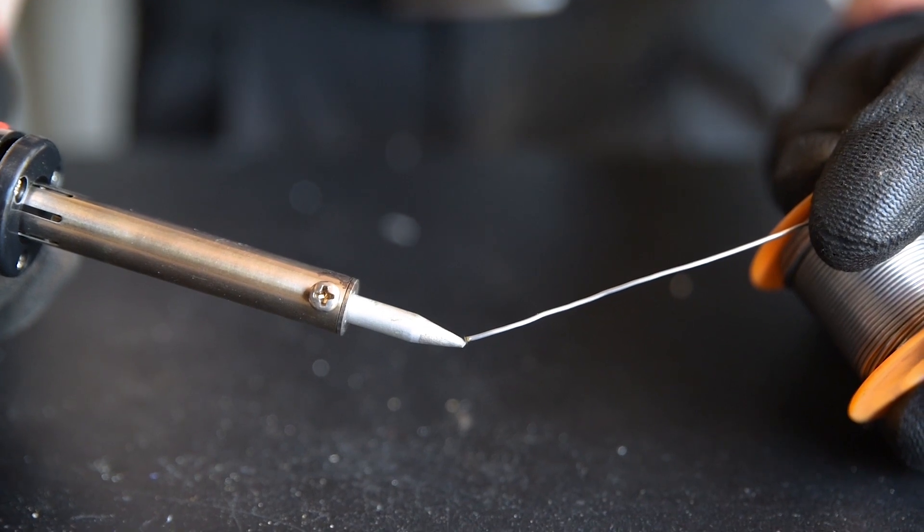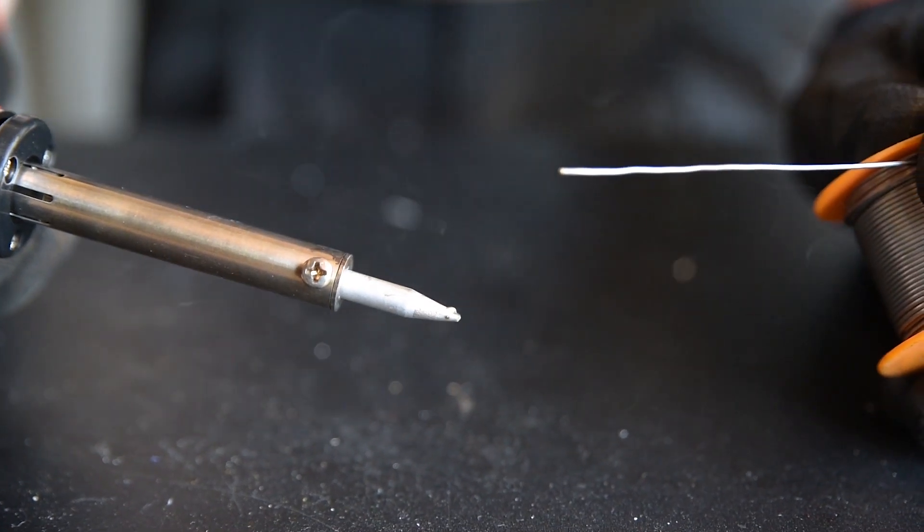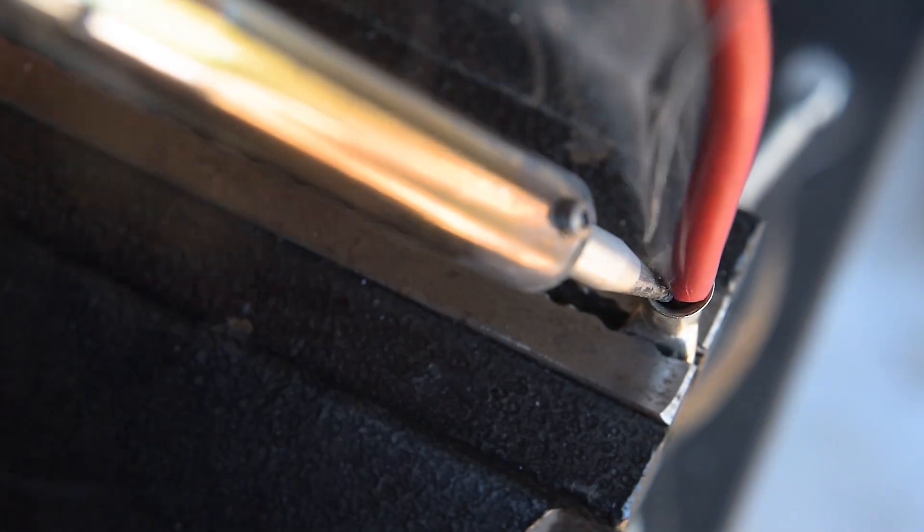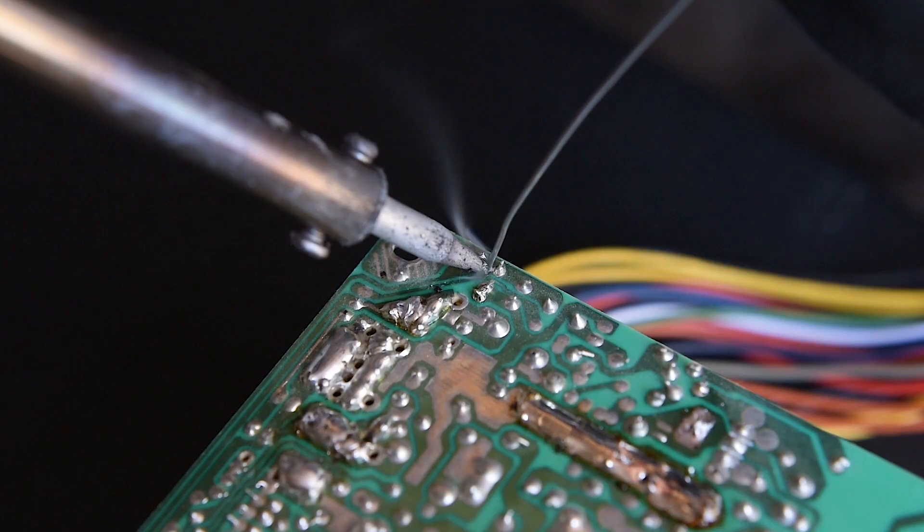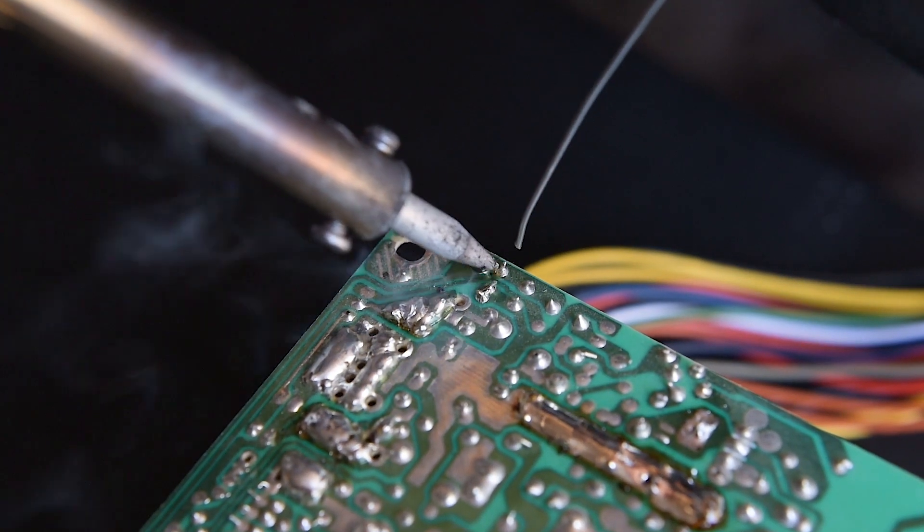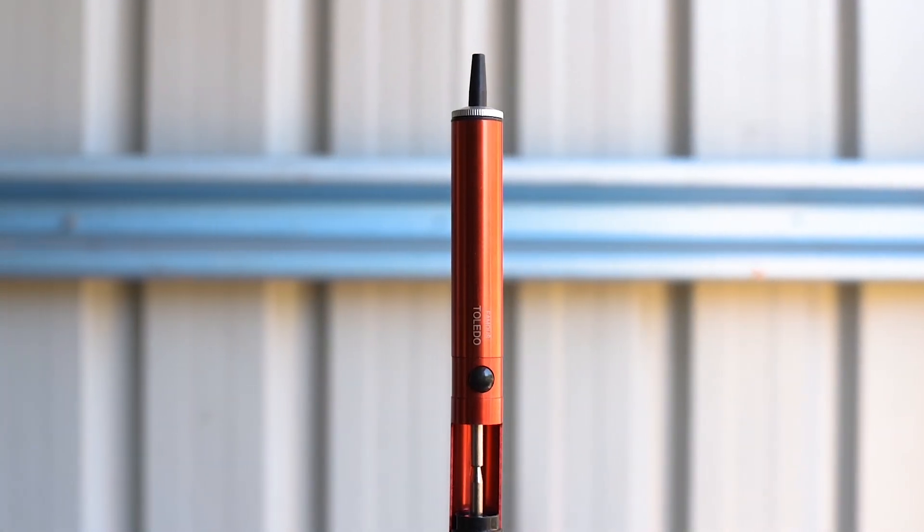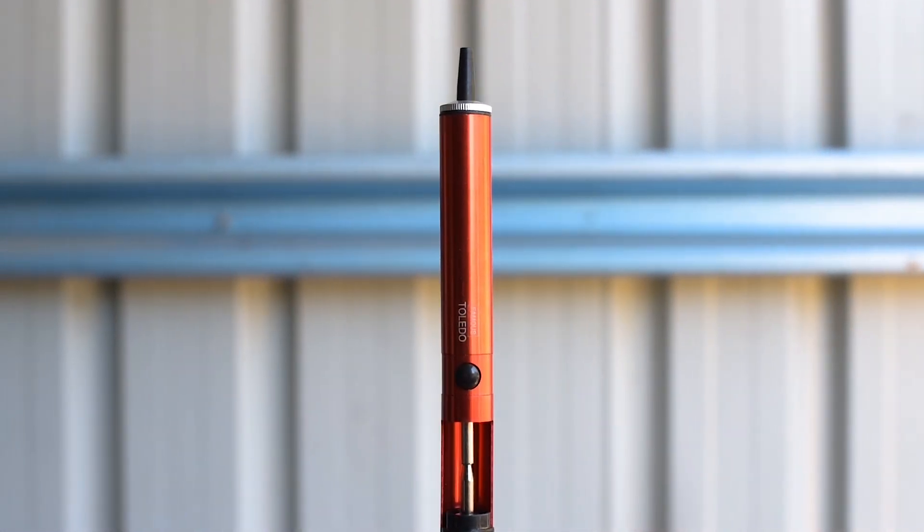If this is not the case, re-tin the tip of your iron and hold it to the join a little longer before applying the solder. If you make a mistake on a job and apply too much solder, having the Toledo de-soldering pump on hand may save the day.